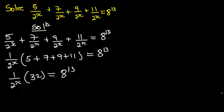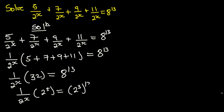From here we can write 32 as 2 to the power 5. And this will be equal to — we can also rewrite 8 to the power 13 as 2 to the power 3, all to the exponent 13.